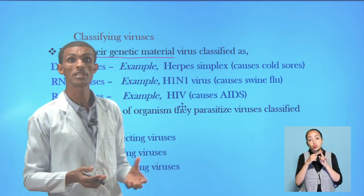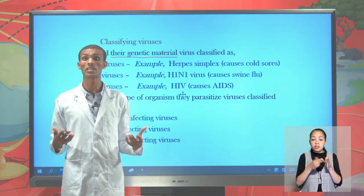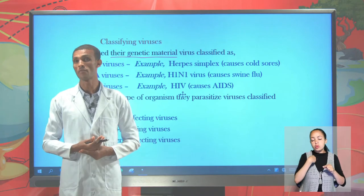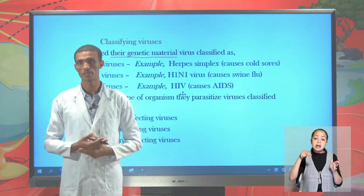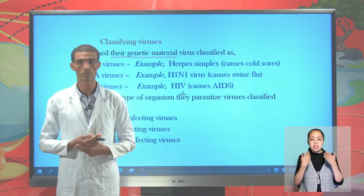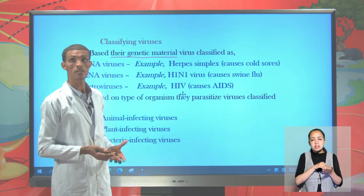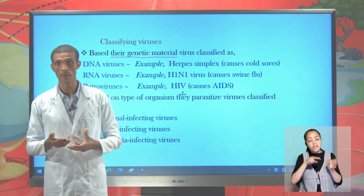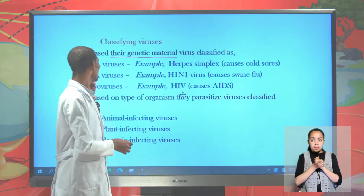One is DNA virus. If they contain DNA as genetic material, we call them DNA viruses. For example, herpes simplex virus — a virus that causes cold sores. The way they can express: DNA to RNA to viral protein and enzyme.